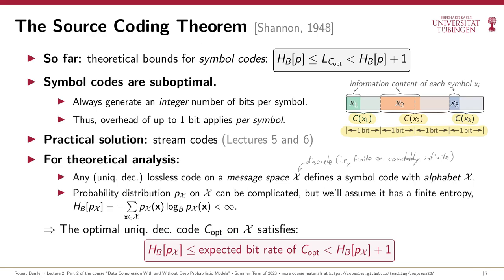There's a subtle caveat: the lower bound holds strictly for uniquely decodable codes. One could argue that unique decodability isn't crucial for a code operating on entire messages, since a code can slightly violate the lower bound by encoding some information content into the length rather than the content of the compressed bitstring. However, at some point a container must always store the length — for example, a file system stores file size on your SSD — so in expectation, lossless compression cannot beat the entropy.